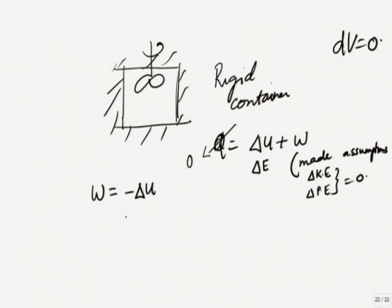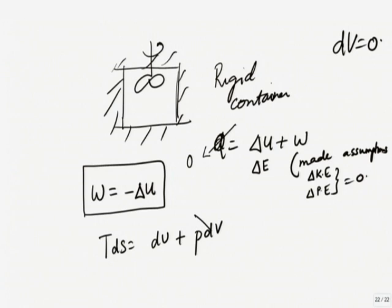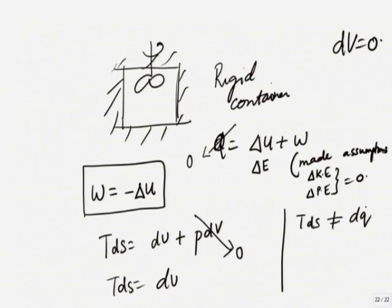I have the property relationship TdS equals dU plus PdV. This has to be true — it is a property relationship. But in this present process, you did not allow the volume to change, so that term is 0. Please do not try to start equating TdS with dQ — it has nothing to do with it. This equation turns out to be TdS equals minus W.